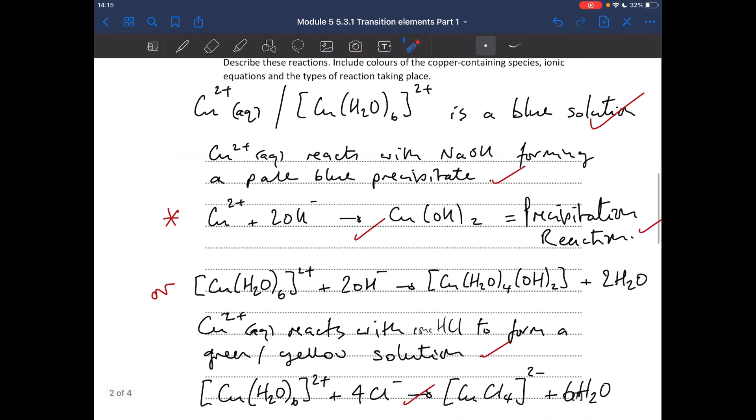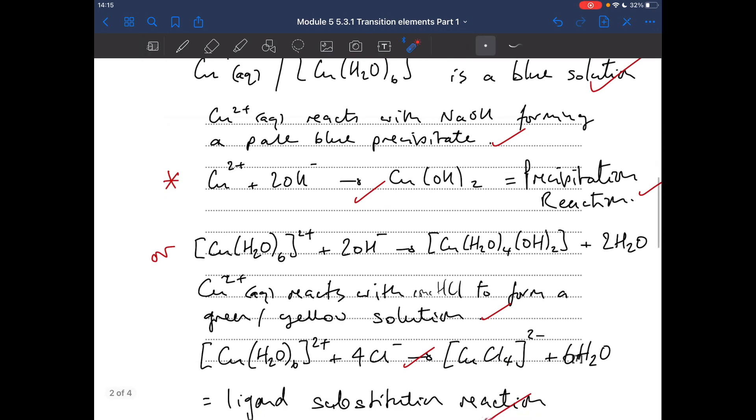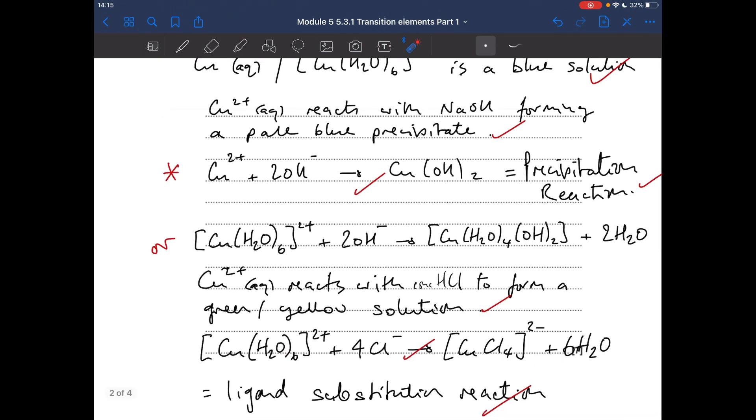And the other reaction: aqueous copper 2 plus ions react with conch HCl to form a green slash yellow solution. I'll talk about the colours in a second, but either of those colours will be fine. There's the equation, and it's a ligand substitution reaction.